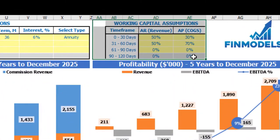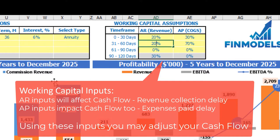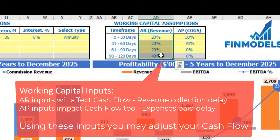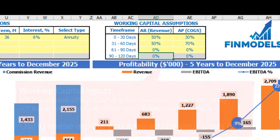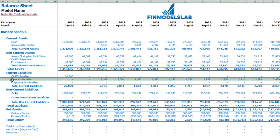On the dashboard you may also set up your working capital assumptions. There are two main sections: accounts receivable, applied to revenue, and accounts payable, applied to COGS. You have up to four time frames: 0–30 days, 31–60 days, 61–90 days, and 90–120 days. For each column the total should be 100%. If you go to the balance sheet, you may see the accounts receivable calculation based on the AR revenue assumptions, and accounts payable calculation based on the COGS accounts payable assumptions.